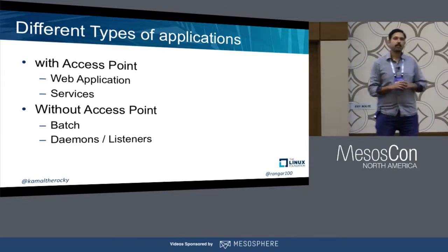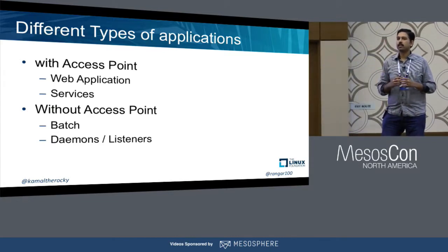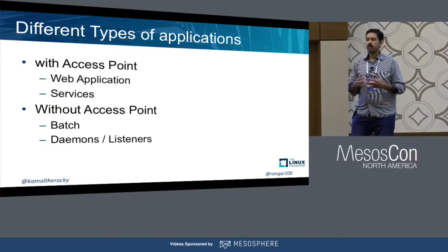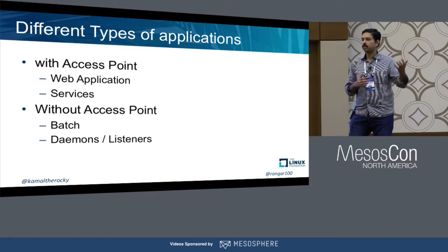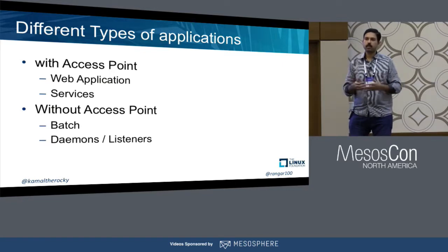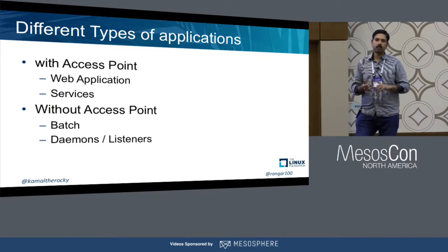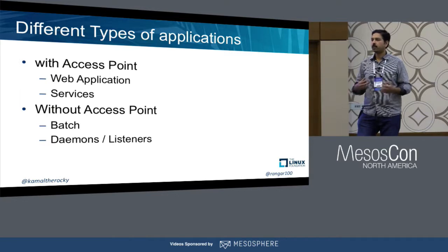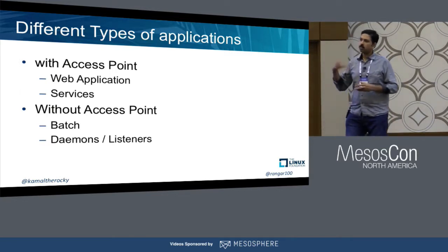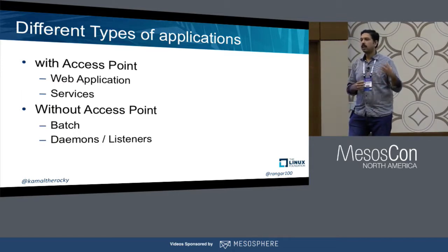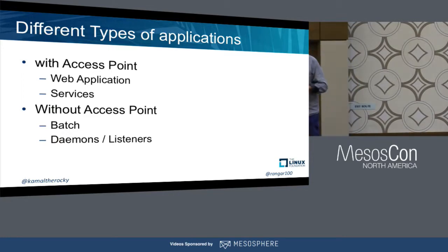When you typically look at any applications, the way we classify them is: applications which need an endpoint — which are user-facing or accessed by other applications — that come through an endpoint, which could be an IP colon port or a DNS, accessed through any protocol. That means traffic enters through a single endpoint but gets load balanced between multiple instances. The other type of application doesn't have an entry point — mostly daemons or batches — which are mostly asynchronous, taking data from the backend, processing it, and doing something with that. Today's talk is mostly about the first section: applications which need an access point or endpoint through a load balancer.